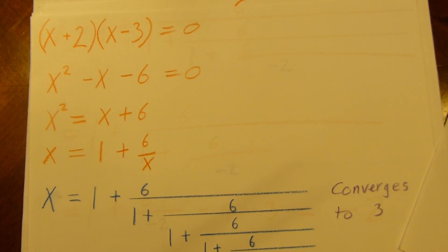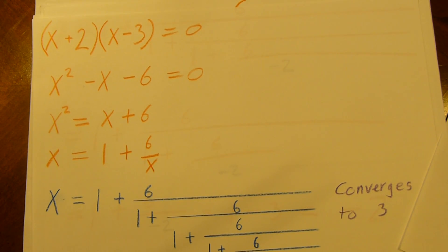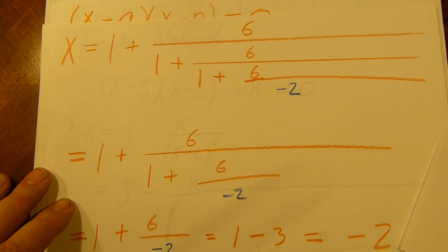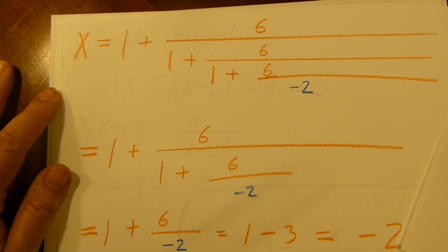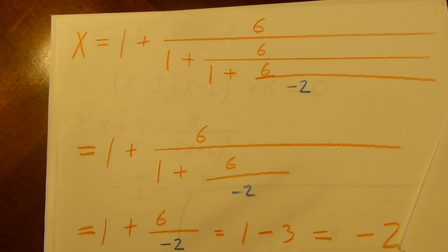So let's take a look at an example. Examples are fun. (x + 2)(x - 3) equals 0. I do as before. And we get x equals 1 plus 6 over 1 plus 6 over 1 plus 6 over blah blah blah. This converges to 3. But we had two roots. We also had negative 2 as a root. Let's take a look at what happens if we try to put that in. x equals 1 plus 6 over 1 plus 6 over... And let's just stick negative 2 in here.